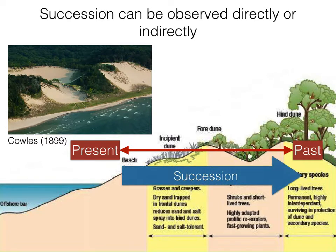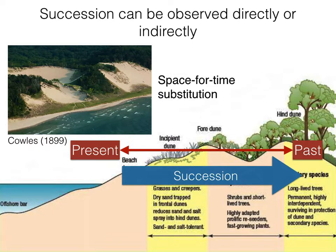Cowles argued that the incipient dunes represented early stages of succession, while you were essentially walking backwards in successional time as you moved away from the lake's edge toward the hind dunes. Early pioneer species — grasses and creepers — occurred on the incipient dunes; middle successional species like shrubs and short-lived trees on the fore dunes; and long-lived trees in the oldest hind dunes. This is generally referred to as a space-for-time substitution — different locations represent different times since initial community establishment, so you see the successional sequence over space rather than over time.